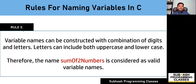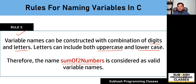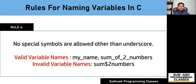Rule number three says variable names can be constructed with a combination of digits and letters. Letters can include both uppercase and lowercase. As you can see, the example shown is a variable name which is a combination of both letters and digits, and it contains both uppercase and lowercase letters. So this is rule number three.